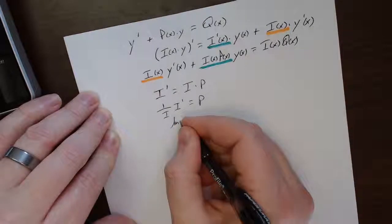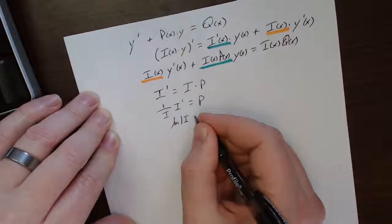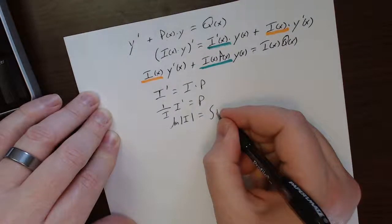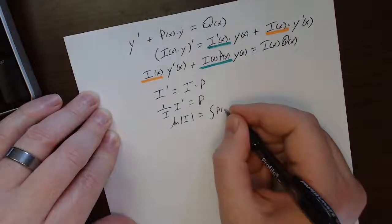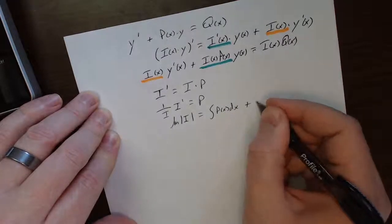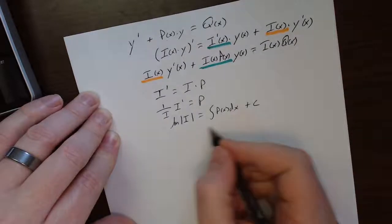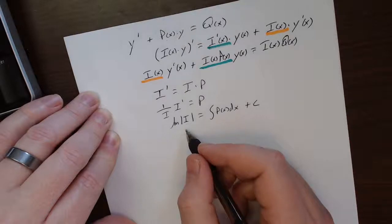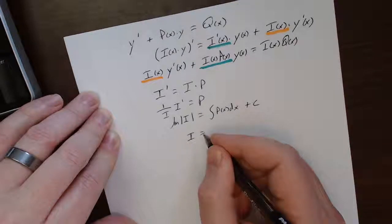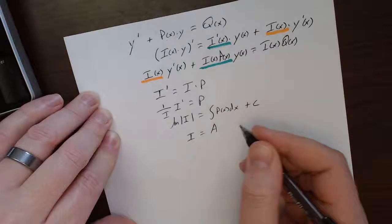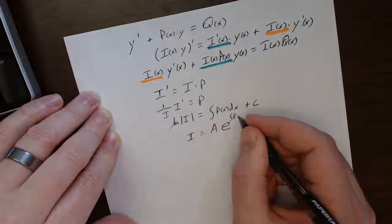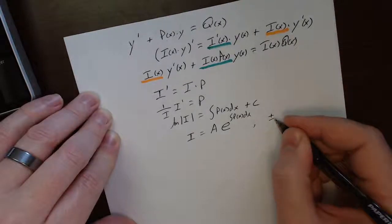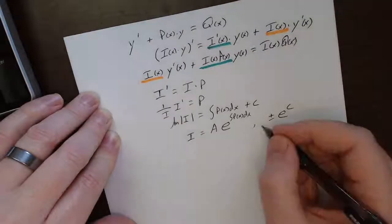And I get natural log of absolute value of i is equal to some constant a, e to the anti-derivative, the anti-derivative, p of x dx plus some constant that I generate here. So I take the exponentiate both sides and then drop the absolute value. And what do I get? I get i is equal to some constant a, e to the anti-derivative, where a is what? a can be plus or minus e to the c. That's what a can be.